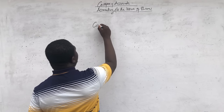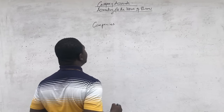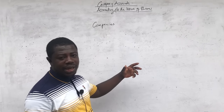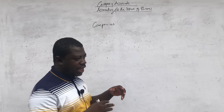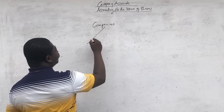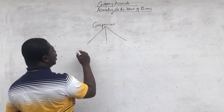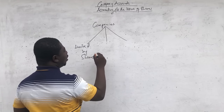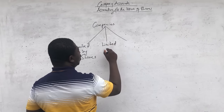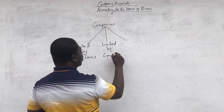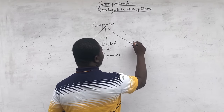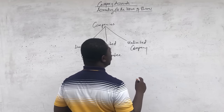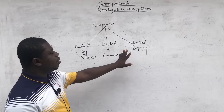When it comes to companies, companies are organizations that are much larger. If you look at the characteristics of a company, we look at limited liability as one of the key characteristics, even though we have unlimited companies. So we have a company that is limited by shares, a company that is limited by guarantee, and also an unlimited company, which is usually not common. But these are the three types of companies.